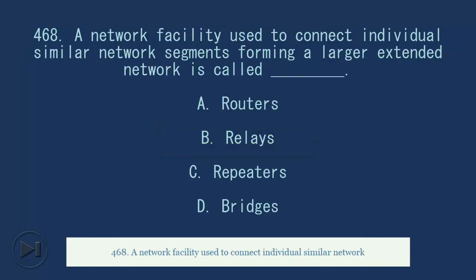468. A network facility used to connect individual similar network segments forming a larger extended network is called blank. A. Routers. B. Relays. C. Repeaters. D. Bridges. Answer, C. Repeaters.